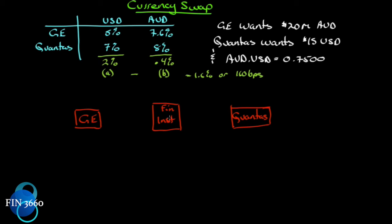The difference — two percent minus 0.4 percent — equals 1.6 percent or 160 basis points. There's a possibility of squeezing 160 basis points out of the system. The financial institution might say there's plenty of margin to split among the two companies. It will suggest GE borrows in its own market and Qantas borrows in its own market. GE wants 20 million Australian dollars and Qantas wants 15 million US.